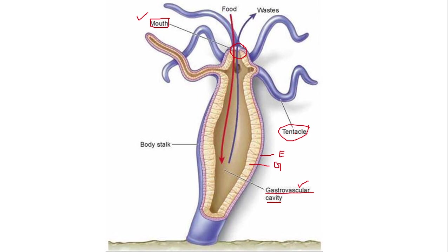The tentacles help in grabbing food — whatever hydra needs to eat is grabbed through the tentacles. On the tentacles, there are many stinging cells, which contain poison. These cells are called nematocysts. This concludes a brief introduction to hydra.